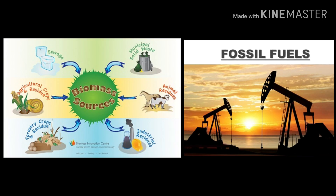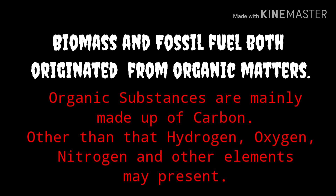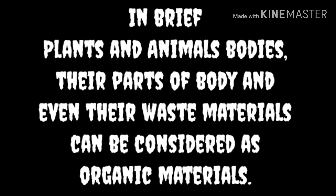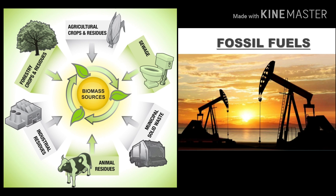Most of you may have a confusion between biomass and fossil fuel, so let's compare the difference between them. Both biomass and fossil fuel originate from the same source — organic materials. Organic substances are made up mainly of carbon; other elements like hydrogen, oxygen, and nitrogen can also be present. In brief, plant and animal bodies, their body parts, and their waste materials can be considered as organic materials, which are the main source for the formation of both biomass and fossil fuel.